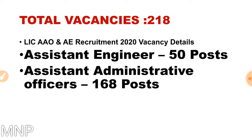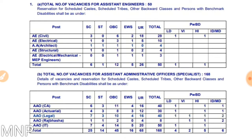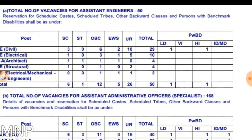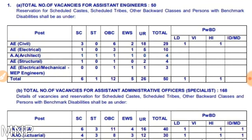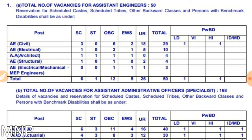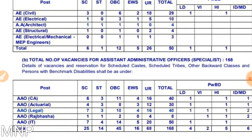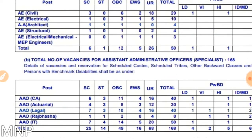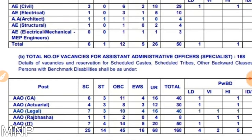The total number of vacancies is 218. For assistant engineers it is 50 posts and for WAO specialists it is 168 posts. The bifurcation is shown in the figure here. There are posts of assistant engineer civil, electrical, architect, structural, mechanical, and MEP engineers — total 50 vacancies. For WAO assistant administrative officers specialist, the 168 vacancies include categories of CA, actuarial, legal, Rajbhasha, and IT.